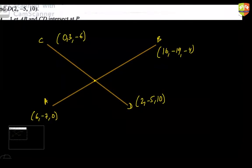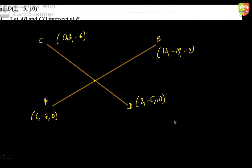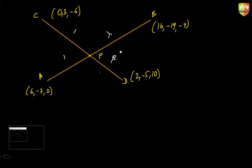How do you find the point of intersection when dealing with 3D points? Use the concept of the section formula. Let P be the point of intersection. Say P divides AB in the ratio λ:1, and it divides CD in the ratio β:1.